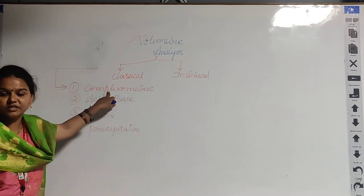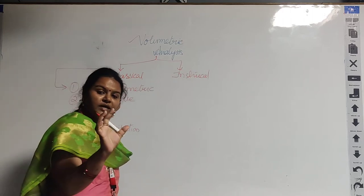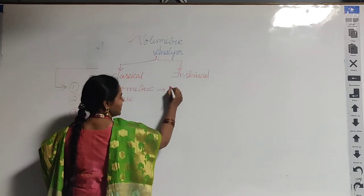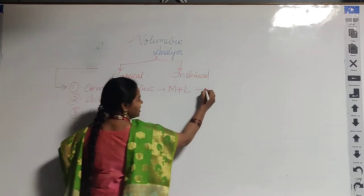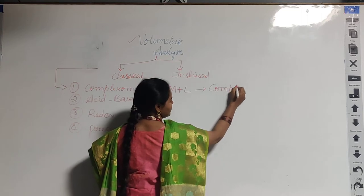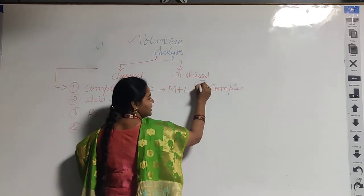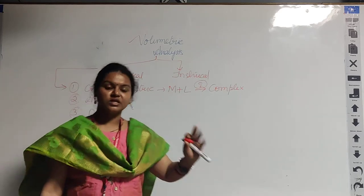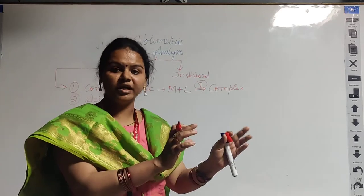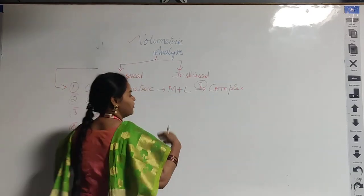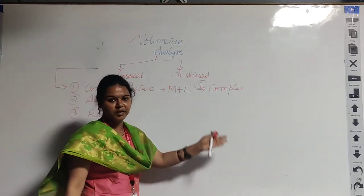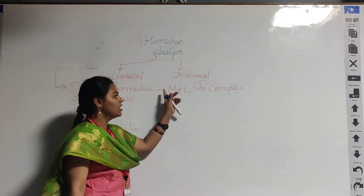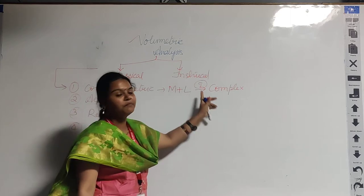Complexometric titrations involve the formation of a complex between a metal and a ligand. When a metal reacts with a ligand, a complex is automatically formed in the presence of an indicator. An indicator is used to identify the endpoint through a colour change — for example, colourless to pink, or blue to pale pink — obtained when a metal reacts against a ligand.